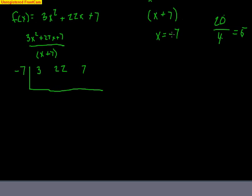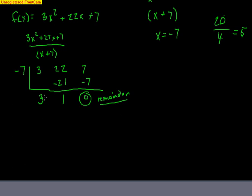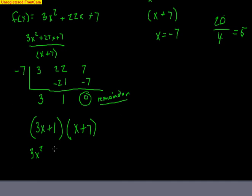Set up synthetic division with coefficients 3, 22, and 7. The zero on the outside is negative 7. Drop down the 3. Multiply negative 7 times 3 to get negative 21. Add 22 plus negative 21 to get positive 1. Multiply negative 7 times 1 to get negative 7. Add 7 plus negative 7 to get 0 — that's the remainder, confirming negative 7 is a zero. The remaining numbers 3 and 1 represent 3x plus 1, which is my other factor. To verify: x plus 7 times 3x plus 1 gives 3x squared plus x plus 21x plus 7, and adding the middle terms gives 22x, so 3x squared plus 22x plus 7. Confirmed.